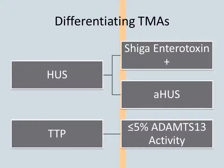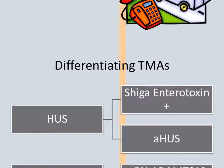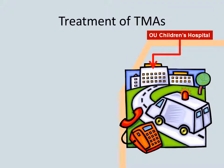HUS and TTP can present in the same way. TTP can be confirmed by measuring ADAMTS-13 activity. HUS can then be sorted by the presence of a shiga-like toxin-producing organism in the stool or an illness consistent with this infection. By the time HUS develops, stool cultures may be negative, leaving differentiation to clinical impression. With the development of effective specific treatments, differentiation of TMAs is more critical than it used to be.